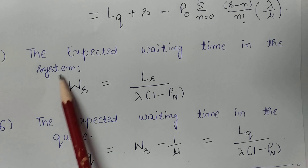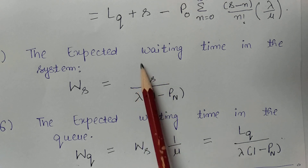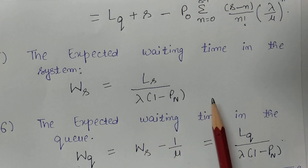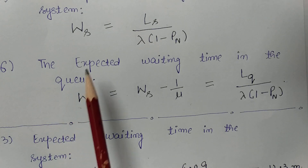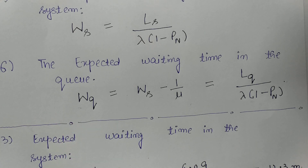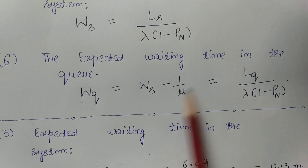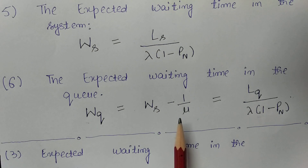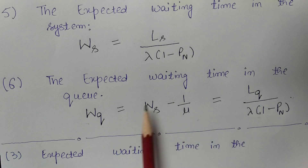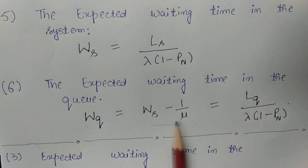The expected waiting time in the system is W_S = L_S divided by the effective arrival rate λ(1 − P_N). The expected waiting time in the queue is W_Q = W_S − 1/μ, which simplifies to L_Q divided by the effective arrival rate. Both forms are easy to remember.